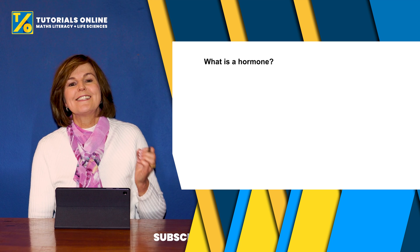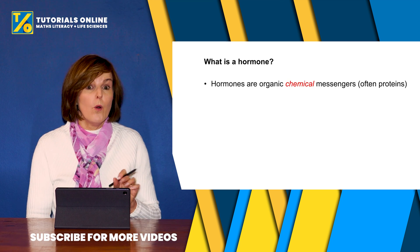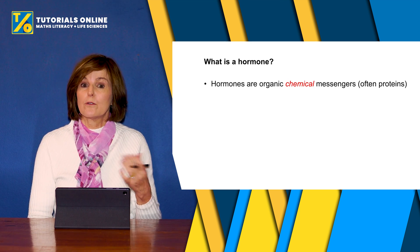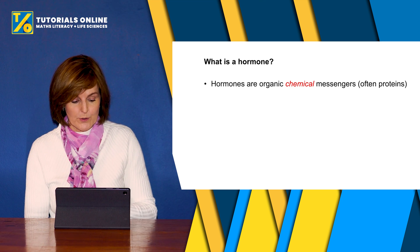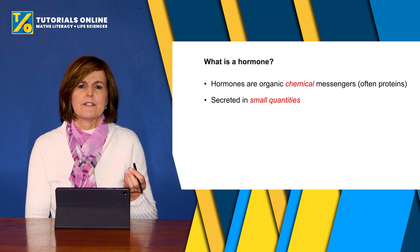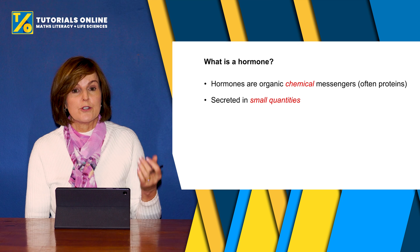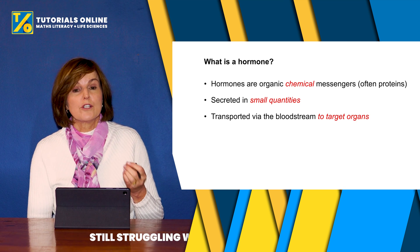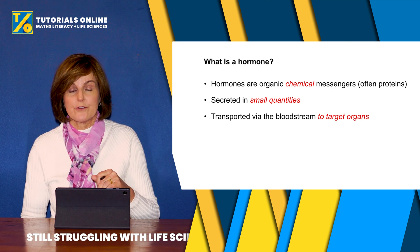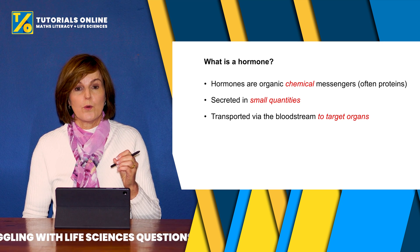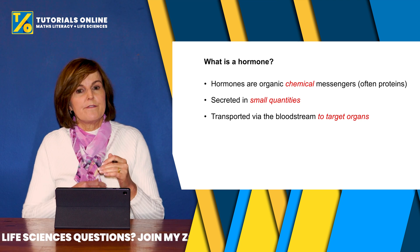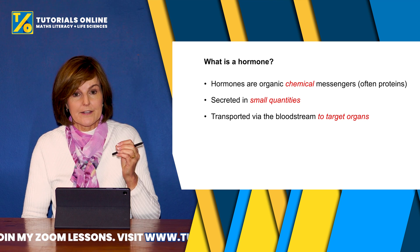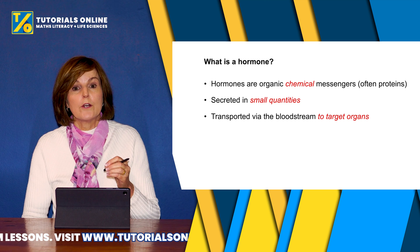Now let's answer the question: what is a hormone? Hormones are organic chemical messengers — they're often proteins, though they can also be steroids, but they are chemical. You only need them in small quantities, so they are secreted in small quantities and transported via the bloodstream to a target organ. Each hormone has a very specific place in the body where it acts — it doesn't affect every organ, only certain ones, and we call those organs target organs.